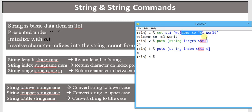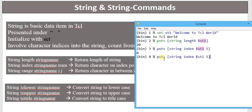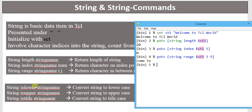Another command is `string range`, which returns the characters between two indices. The syntax is `puts [string range $st1 start_index end_index]`. For example, `string range $st1 3 9` returns all characters present between index 3 and index 9.